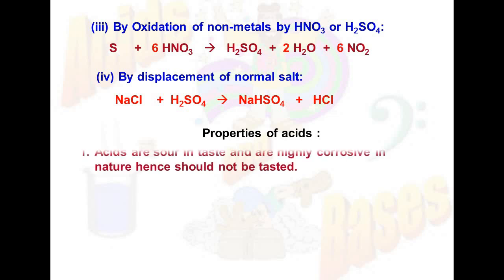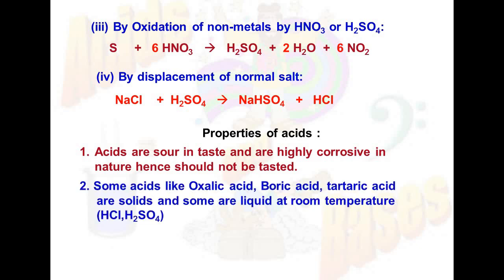Now the properties of acids. Acids are sour in taste and highly corrosive in nature, hence should not be tasted. Some acids like oxalic acid, boric acid, tartaric acid are solid, and some are liquid at room temperature like HCl and sulfuric acid. Third point: acid turns blue litmus red.